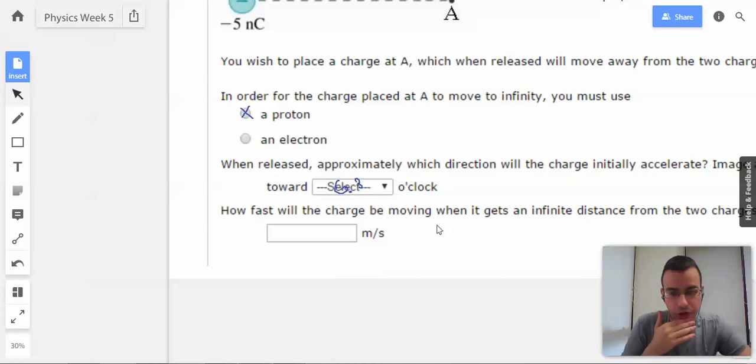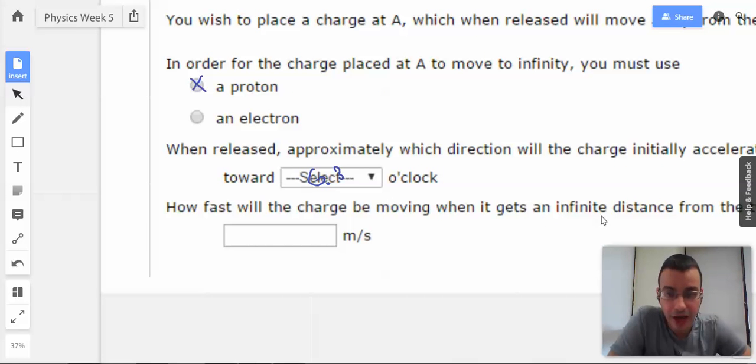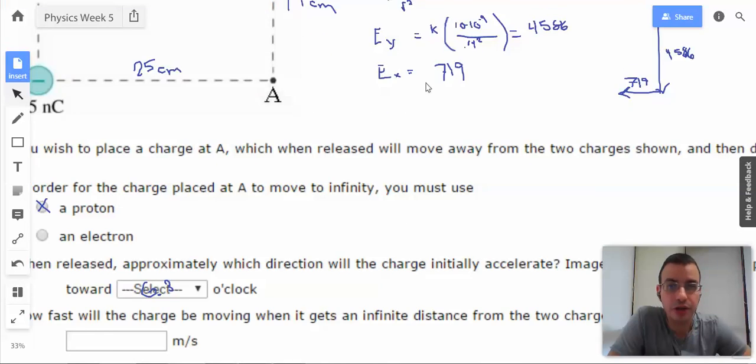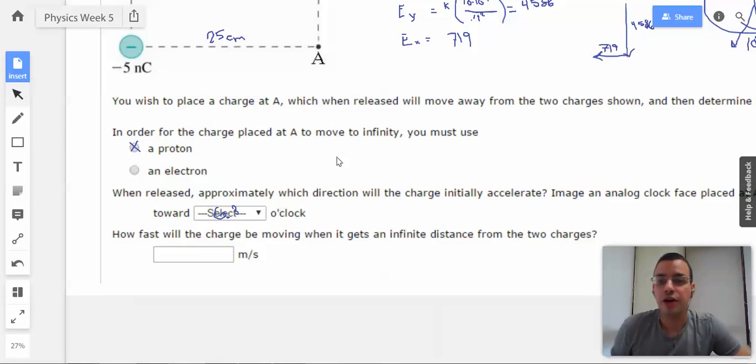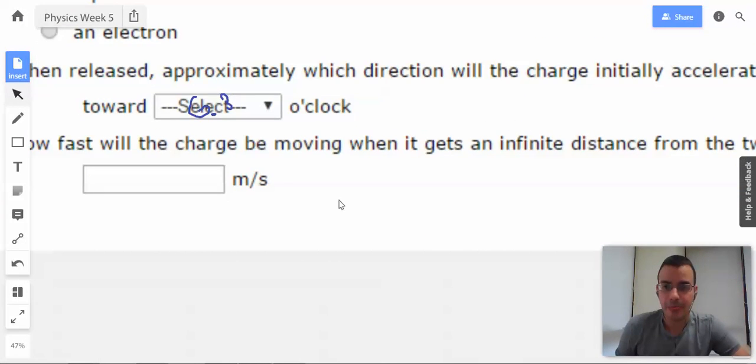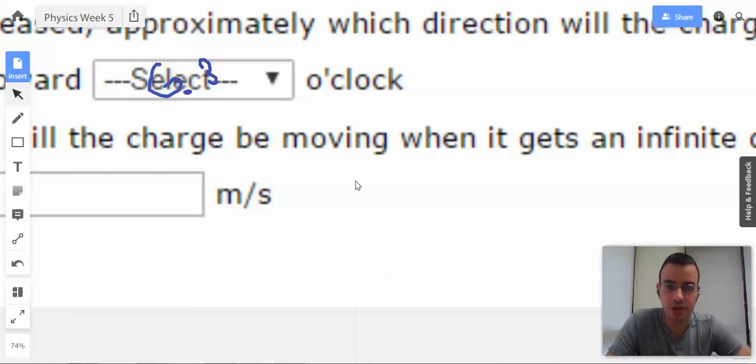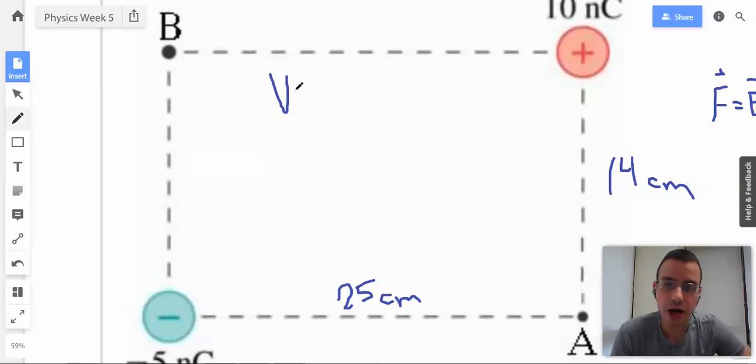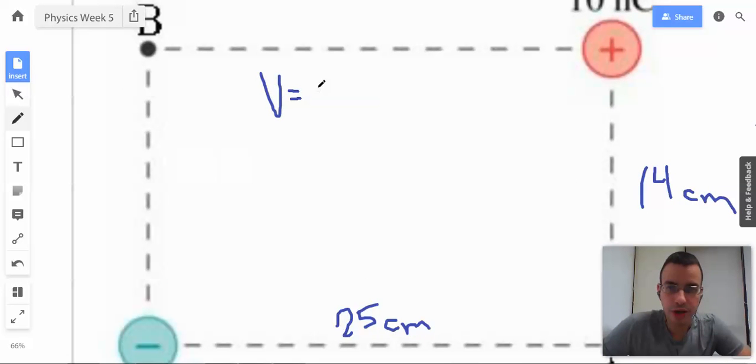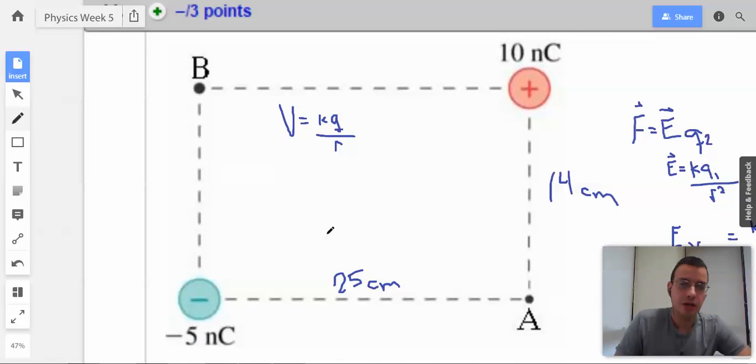Now the real question, I guess those are all real questions, but another question. How fast will the charge be moving when it gets to infinity? So now this is asking about potential. Potential voltage is specifically measured in joules per coulomb. A volt is a joule per coulomb. So we're going to find the voltage difference between the two and add them up.